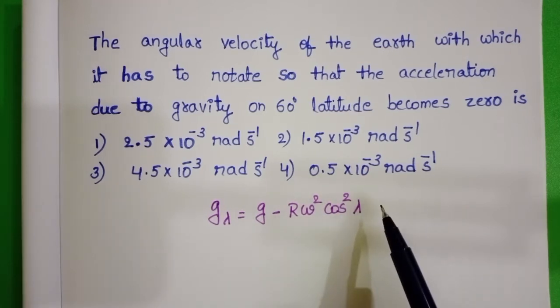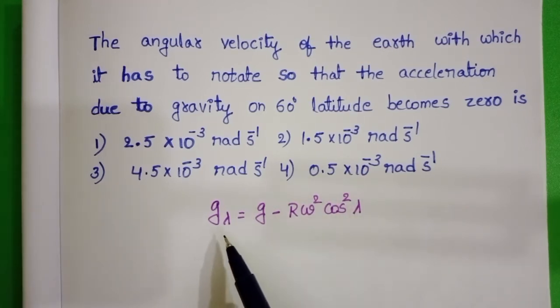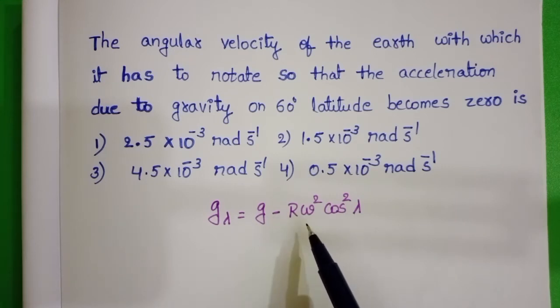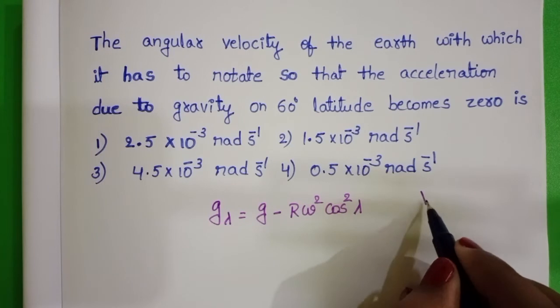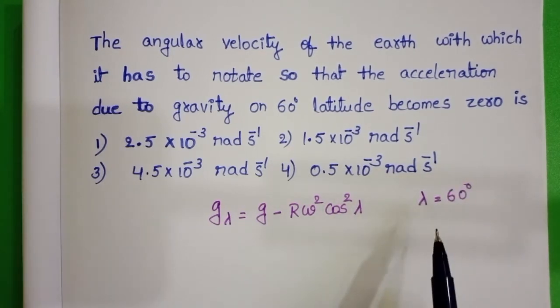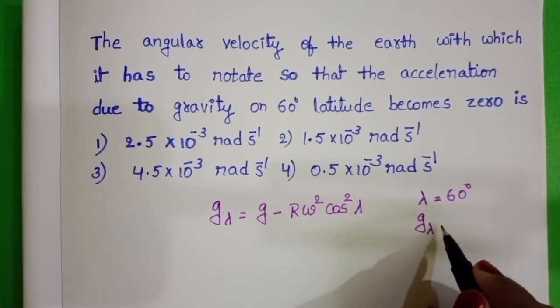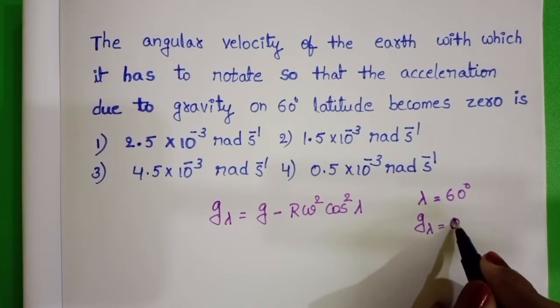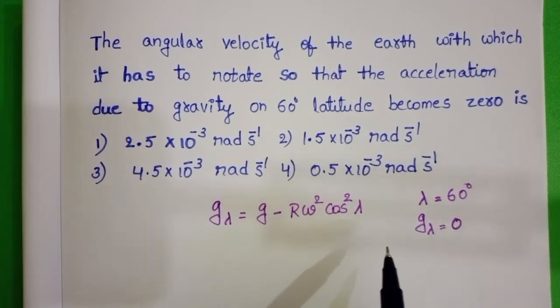Except at poles, the value of g changes due to the rotation of the earth. So here, given latitude angle is 60 degrees. At this latitude angle, to get zero acceleration due to gravity, with what velocity does the earth have to rotate?